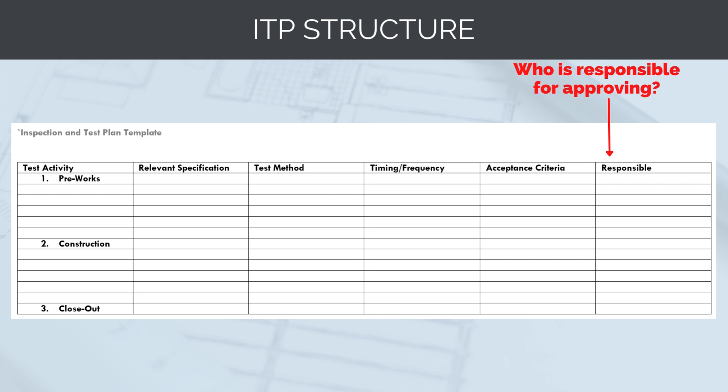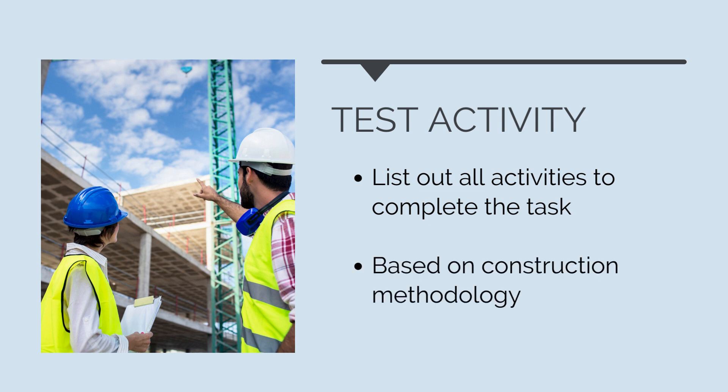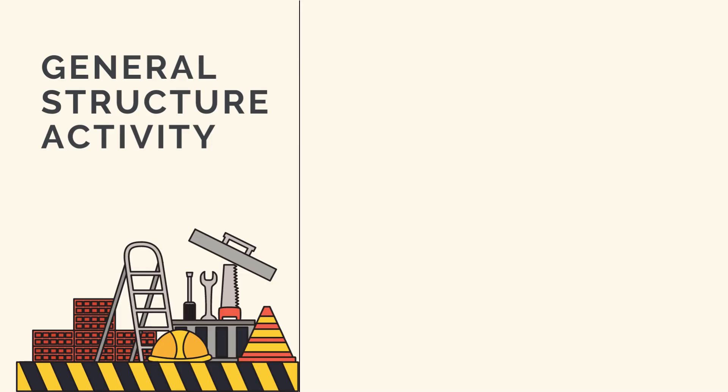I'll go through each of these headings in a little bit more detail now and how to work out how to fill out all the relevant information. Under the test activity section, we'll need to list out all the activities required to complete the task. This will be the basis of our ITP structure, listing out in detail every step required to complete the construction activity. This will be based on the construction methodology and should be comprehensive. We can't just list out the physical works taking place on site — we need to list out all the relevant steps, from site establishment to activity closeout.